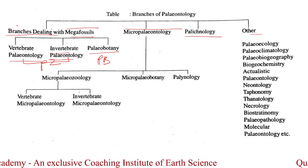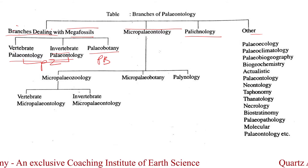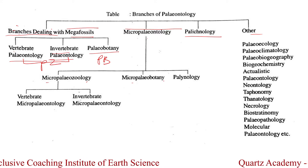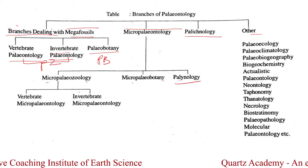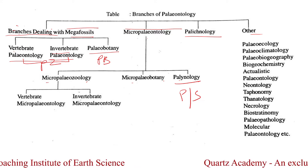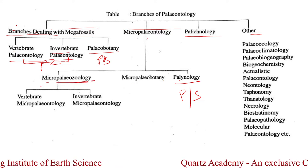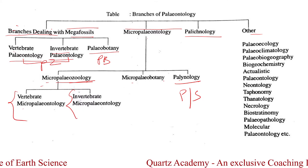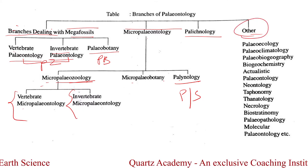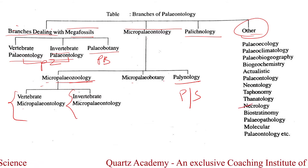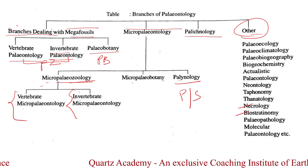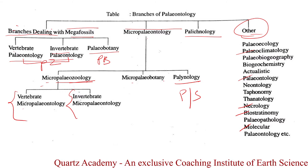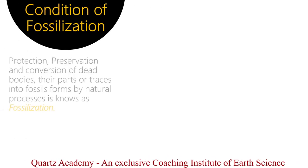The branches dealing with microscopic or Micropaleontology are further divided into Micropaleozoology, Micro Paleobotany, and Palynology. In Palynology, we study pollens and spores. In Microscopic Paleozoology, we study vertebrate micropaleontology and invertebrate micropaleontology. In other cases, we have different branches like Necrology, Biostratigraphy, Molecular Paleontology, Paleoclimatology, and Paleoecology. Let's move to the condition of fossilization.